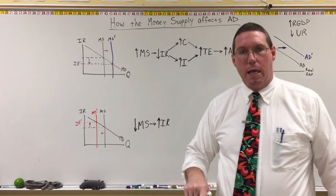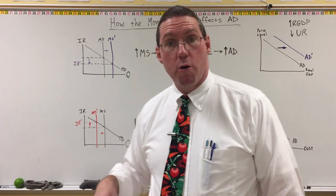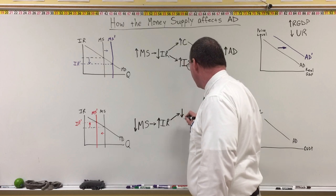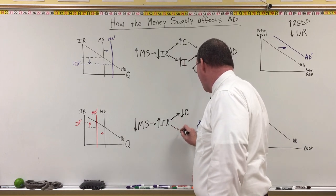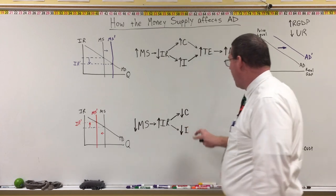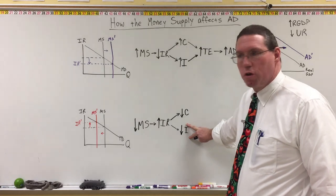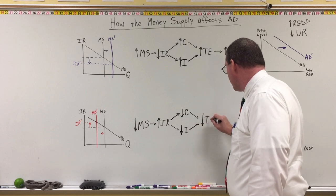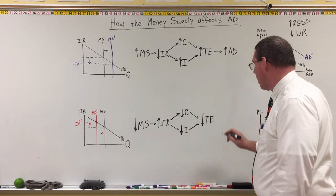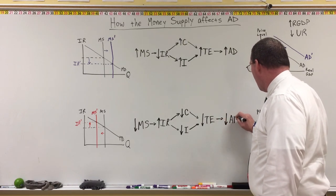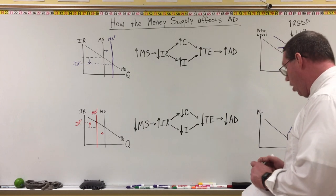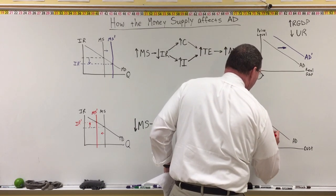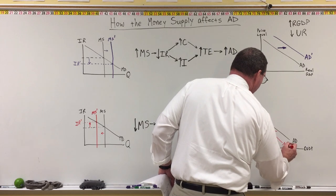A decrease in the money supply results in an increase in interest rates, which means it costs more money to borrow. So consumers and businesses don't want to borrow — it's more expensive — so they're going to spend less. Consumption will go down and investment will go down. When these two large components of total expenditure both decrease, total expenditure itself decreases. A decrease in total expenditure is associated with a decrease in aggregate demand, meaning a leftward shift of the aggregate demand curve — AD prime.